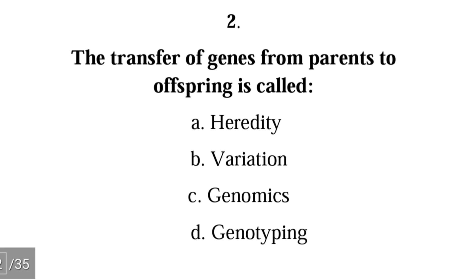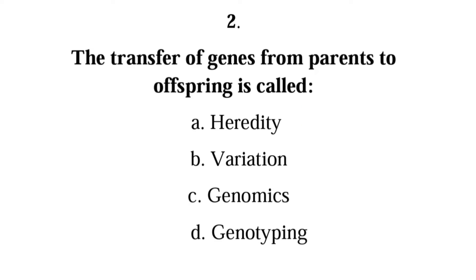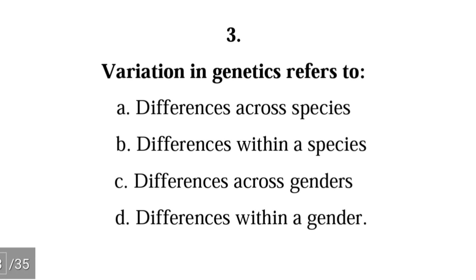Number two: the transfer of genes from parents to offspring is called — heredity, variation, genomics, or genotyping. The correct answer is heredity. Heredity, also known as inheritance, is the transfer of genes from parents to their offspring.